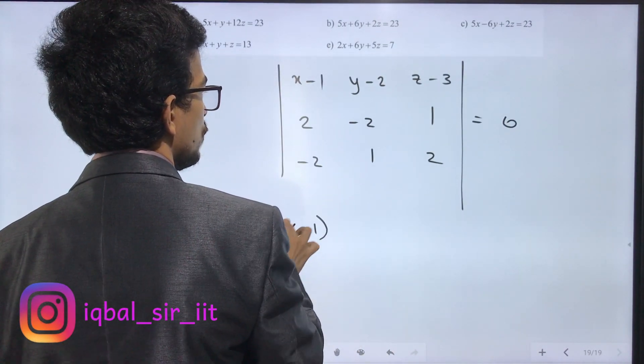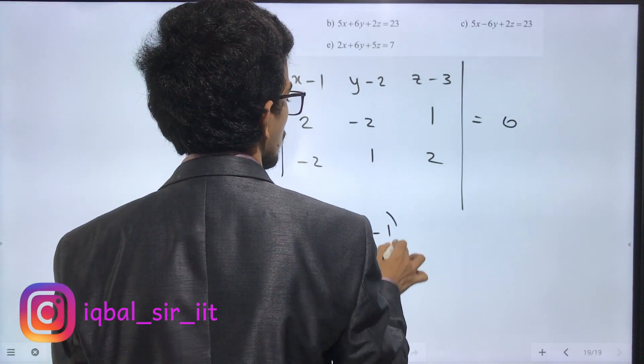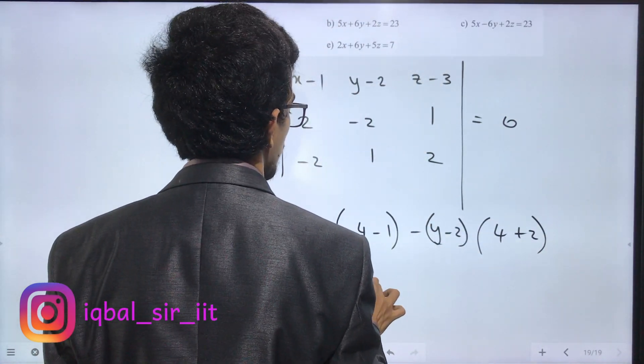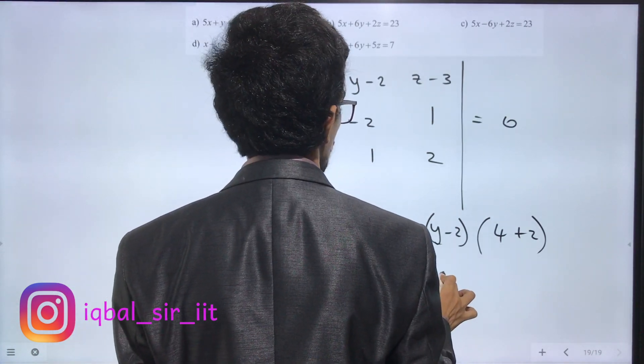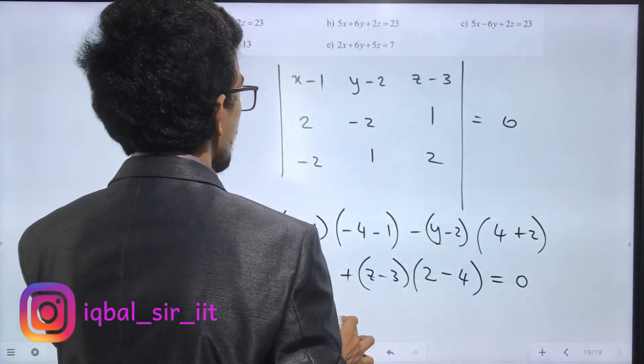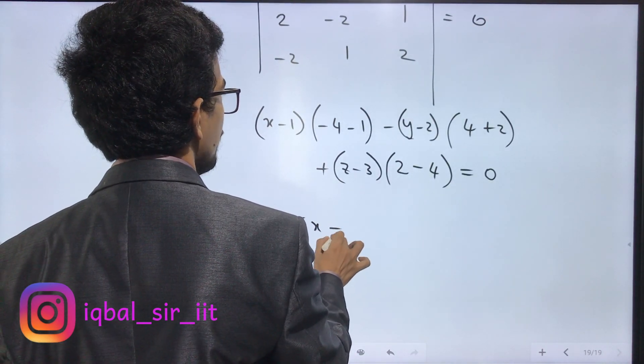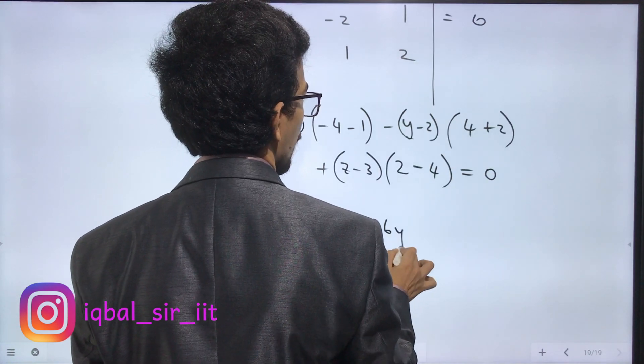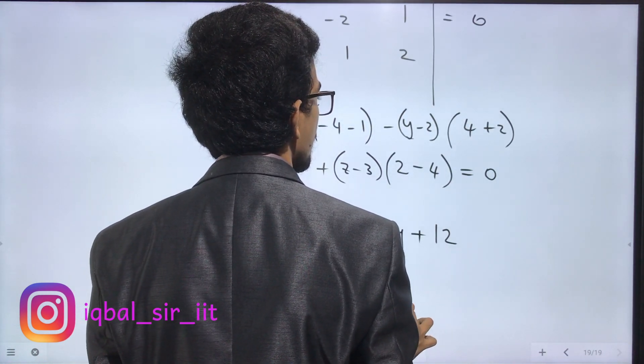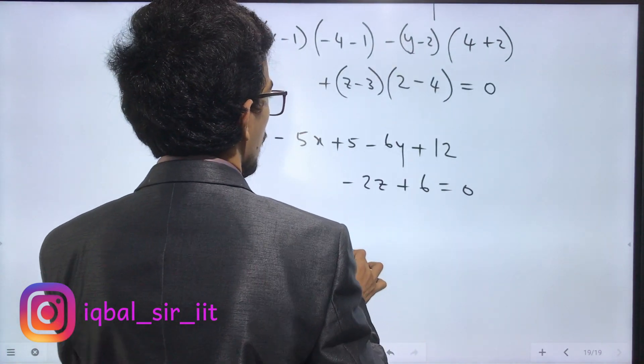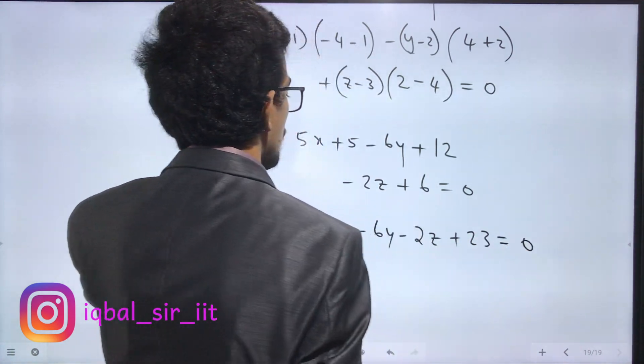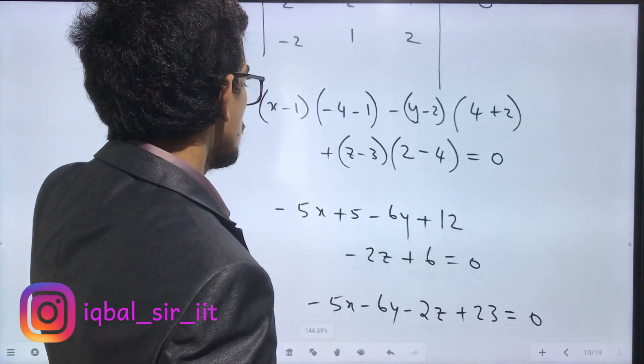Expanding: (x-1)(2)(-2) + (y-2)(something) + (z-3)(terms) gives -5x + 5 - 6y + 12 - 2z + 6 = 0. Simplifying: -5x - 6y - 2z + 23 = 0, or 5x + 6y + 2z = 23.